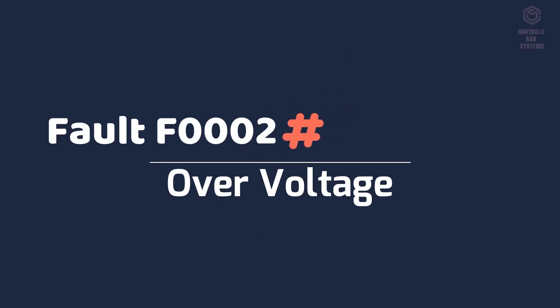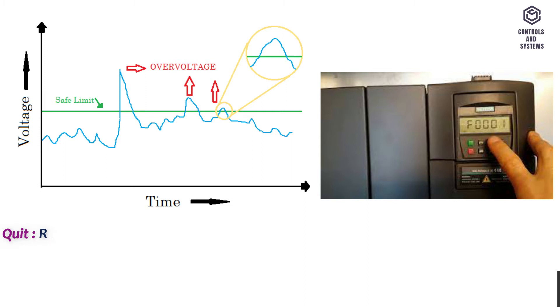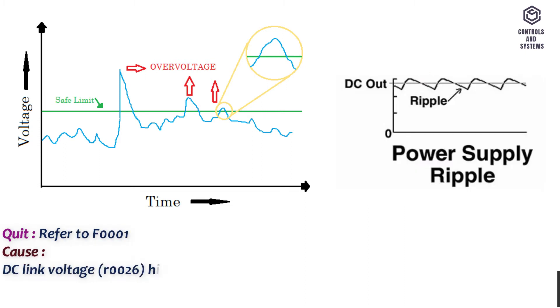Fault F0002 overvoltage. Quit: Refer to F0001. Cause: DC link voltage R0026 higher than the overvoltage threshold. Refer to parameter R0026. Ground fault.